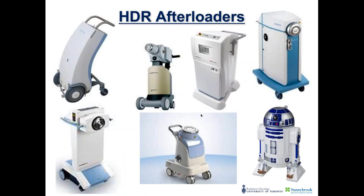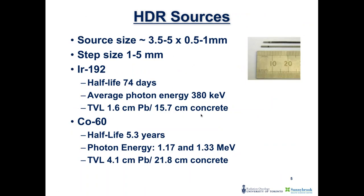The big advantage of HDR over LDR is that planning is completed after the applicators and catheters are in place. Afterloaders come in different sizes and shapes, but they all house a high-activity radioactive source and have a cable that can be advanced remotely along the implanted catheters. The HDR source can be as small as 0.5 mm in diameter and 3.5 mm in length, with step sizes ranging from 1 to 5 mm depending on the equipment.